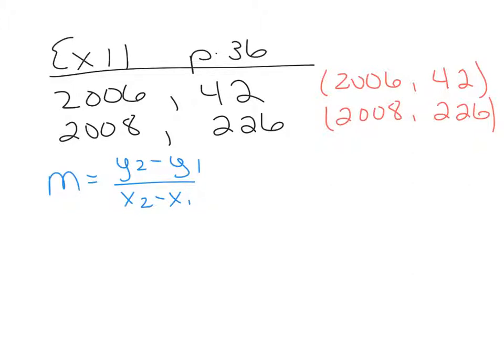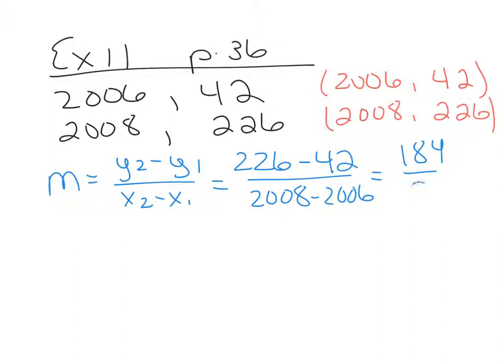which is y2 minus y1 over x2 minus x1 to give us a slope because we cannot write the equation of a line without a slope. So y2 minus y1. And if you look over here, these will be x, x1, x2, y1, y2. So y2 minus y1 will be 226 minus 42. x2 minus x1 will be 2008 minus 2006. And that comes out to be 184 over 2, which is 92. So we have a slope of 92.